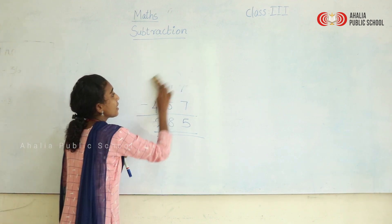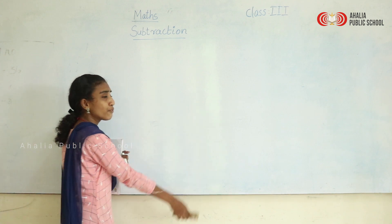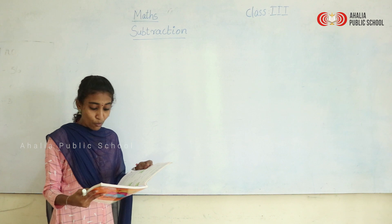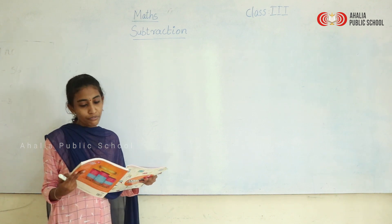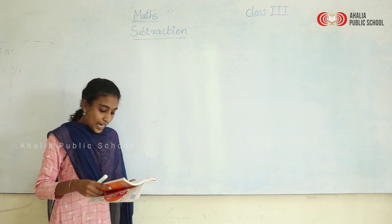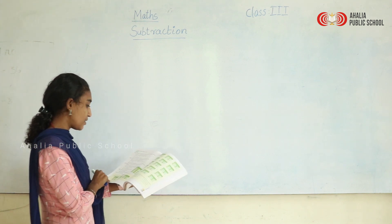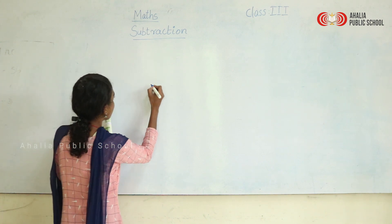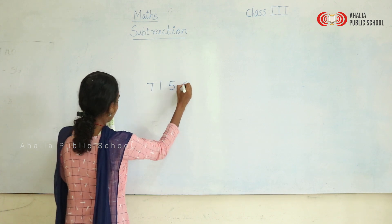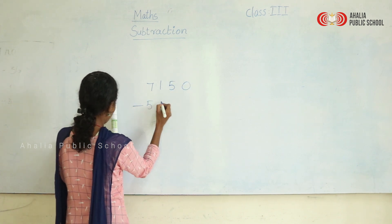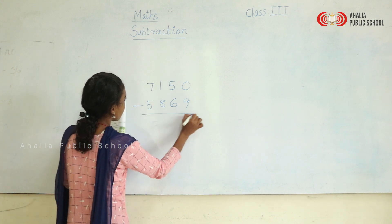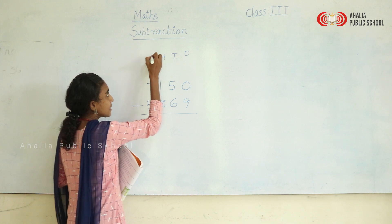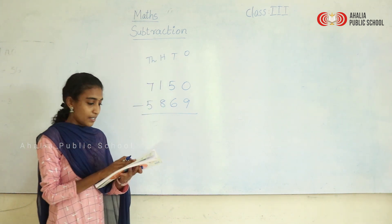We have discussed and learned subtraction of three-digit numbers. What about four-digit numbers? There is no difference between subtraction of three-digit and four-digit numbers except the number of digits. Let's have an example on four-digit numbers. We have ones place, tens place, hundreds place, and thousands place.